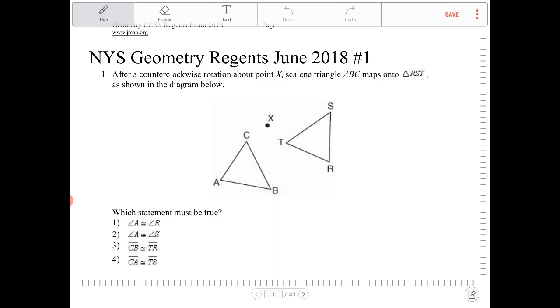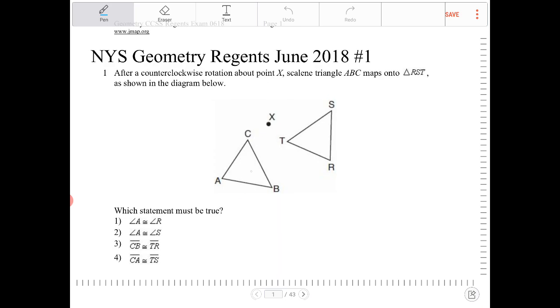So which of these must be true? Let's go down the options here. Angle A is congruent to angle R. So when we rotate this, you can even see just based upon the notation that ABC maps onto triangle RST, right? So A maps onto R. This is correct.